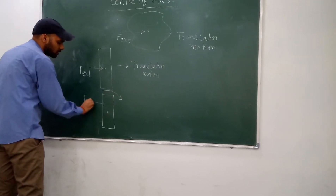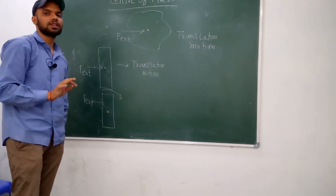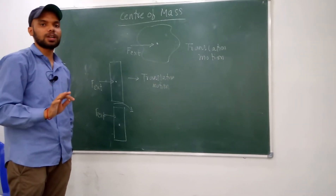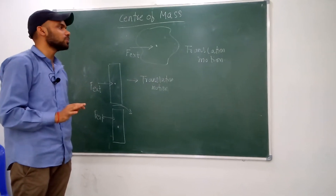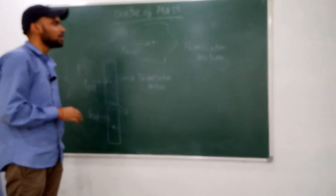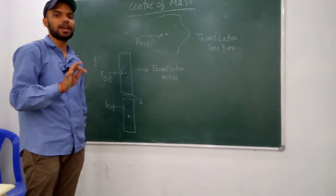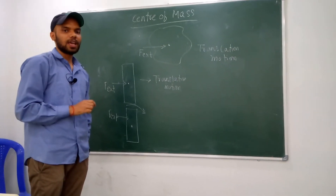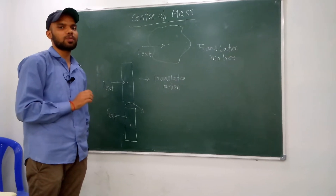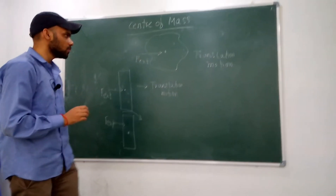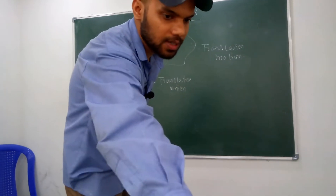What is the center of mass? The proper definition: the center of mass of any body is the point at which the whole mass is supposed to be concentrated. If an external force is applied at the center of mass, that body will exhibit translational motion. If a force is applied other than at the center of mass, that body will exhibit rotational motion.